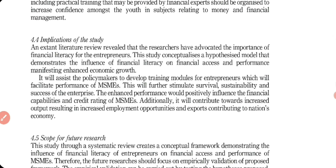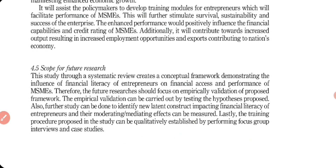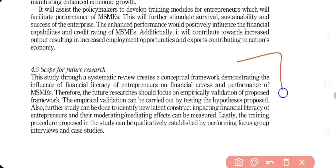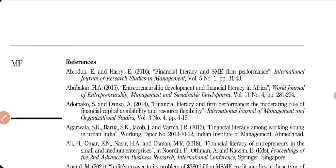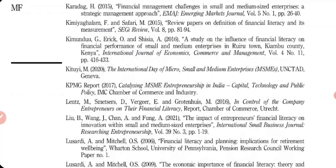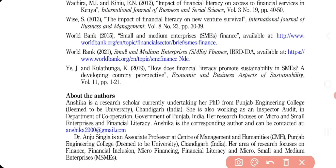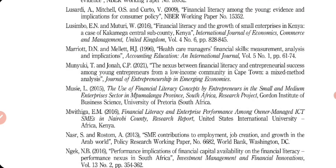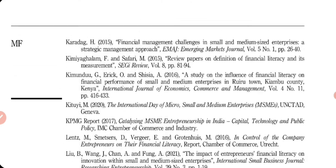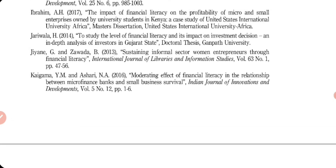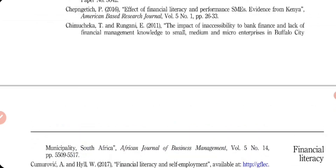At the end, I covered the implications of the study — why it is important, for whom, and how it will be used — followed by the scope for future research, limitations, references, and the author's bio. In upcoming videos I will share how to write the methodology section used in a systematic review. Thank you and have a nice day.